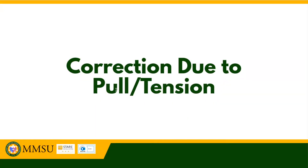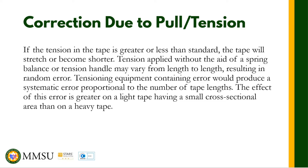Hello and welcome to another lesson on correction in taping. For this video, I am going to talk about correction due to pull or tension. If the tension in the tape is greater or less than the standard, the tape will be stretched or become shorter. Tension applied without the aid of a spring balance or tension handle may vary from length to length, resulting in random error. Tensioning equipment containing error would produce a systematic error proportional to the number of tape lengths. The effect of this error is greater on a light tape having a small cross-sectional area than on a heavy tape.